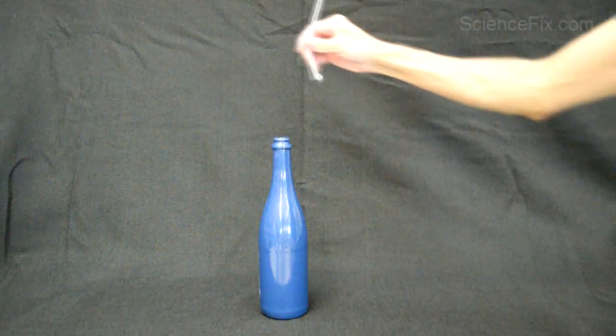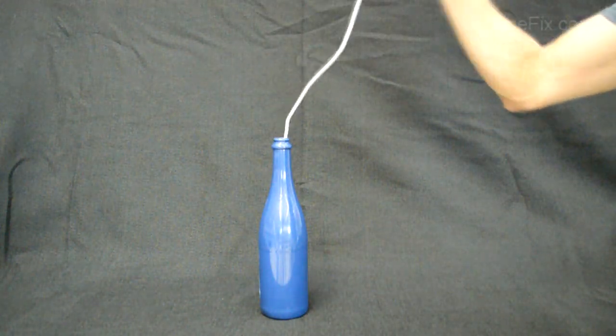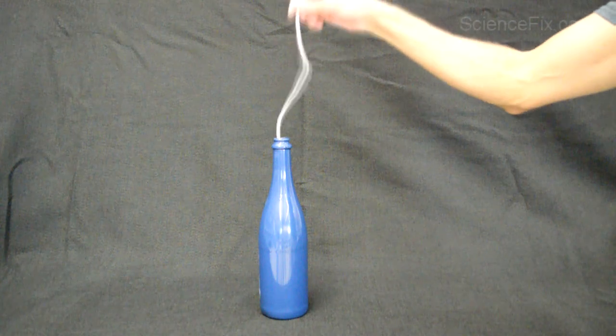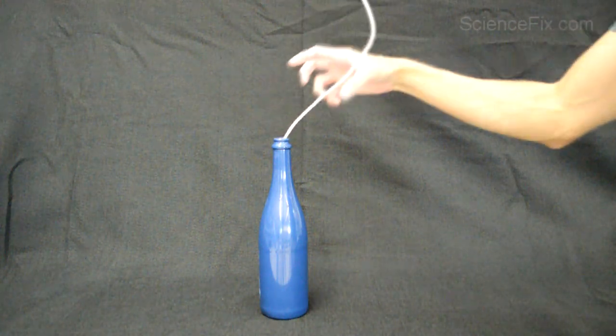Alright, we're gonna do a little magic here. We have our bottle and we're gonna put a rope into the bottle. As you can see, it can go in pretty easily and it can come back out pretty easily.